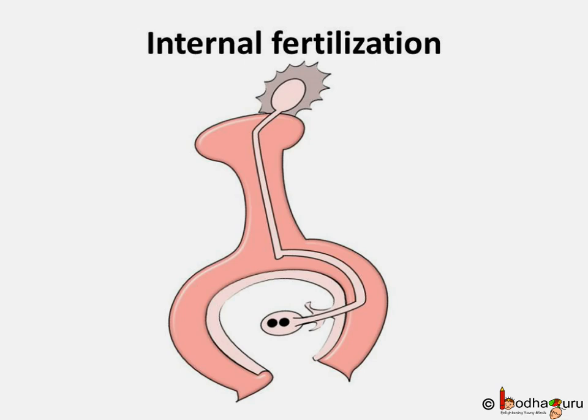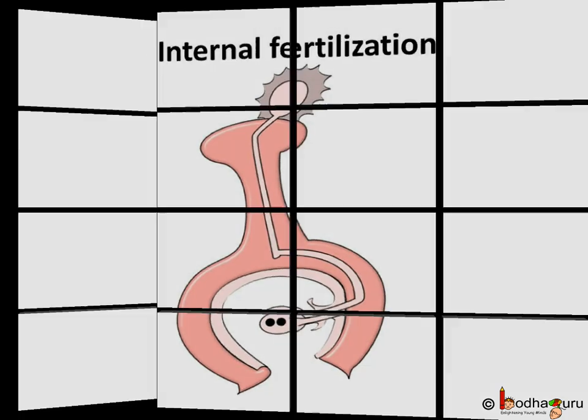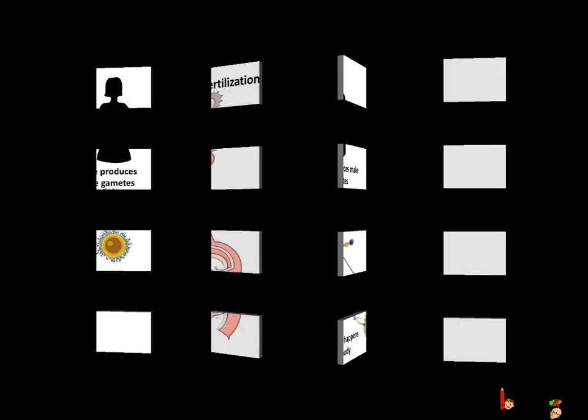When fertilization occurs somewhere inside the female reproductive system, that is called internal fertilization. Internal fertilization is common in animals too.